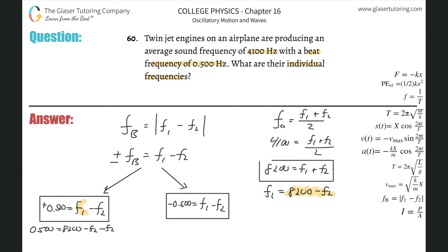So we get 0.5 minus 8200 equals negative 8199.5, and that equals negative 2·F2. Dividing both sides by negative 2, we get F2 = 4099.75 hertz.